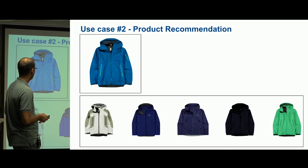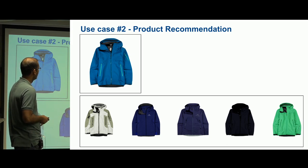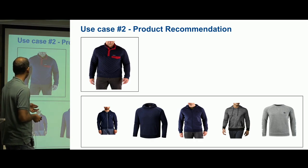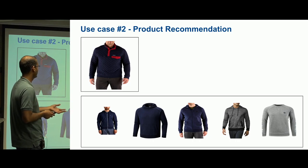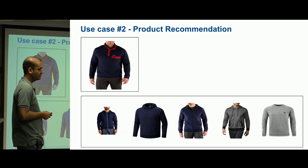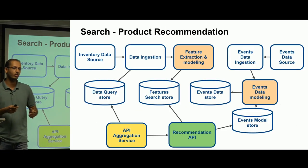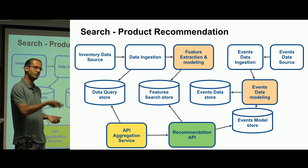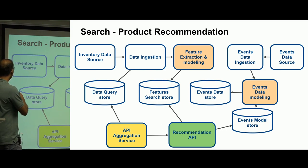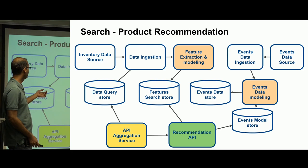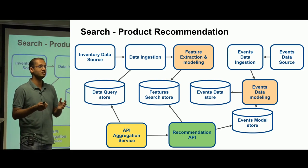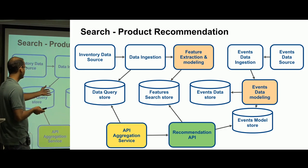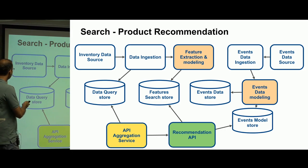The second use case is product recommendation: given an email, recommend similar products. This is essentially a search problem — a person looking at a shirt is recommended something of the same color or similar attributes. This is achieved via catalog and inventory data. Someone takes inventory data, extracts features, and puts them into a feature search store. A feature search operation is a distance function operation, so you need a search index store, not an RDBMS. The data query store is similar to before — RDBMS.